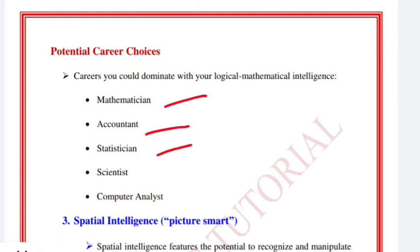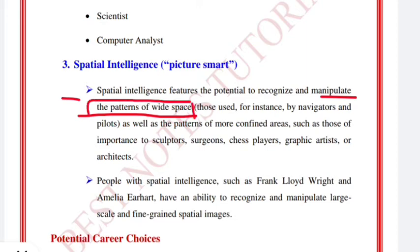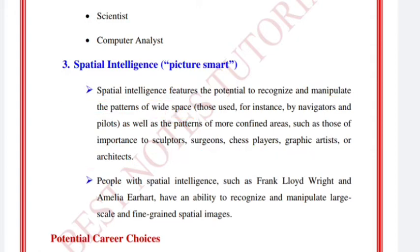Next is spatial intelligence, also called 'picture smart.' Spatial intelligence features the potential to recognize and manipulate patterns of wide space. People with spatial intelligence — such as sculptors, surgeons, chess players, graphic artists, and architects — can recognize and work effectively with spatial patterns.